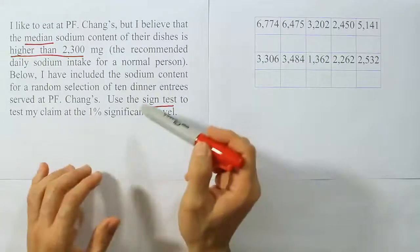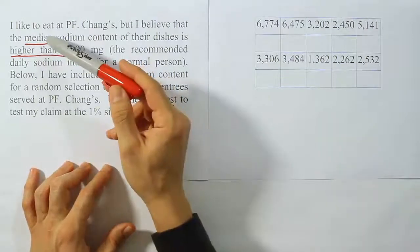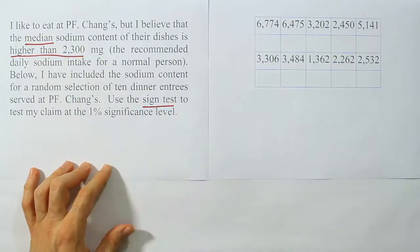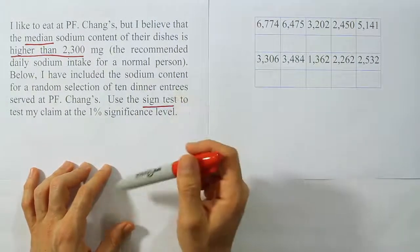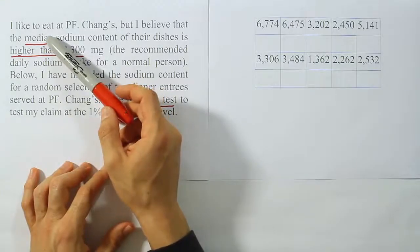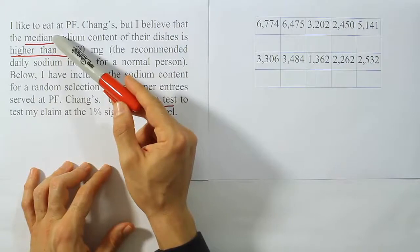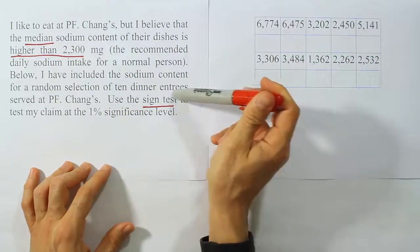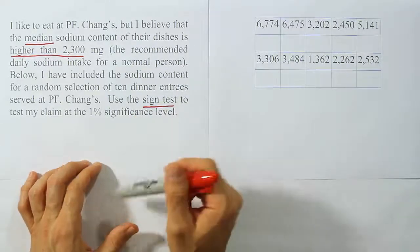It's clear that we're dealing with the sign test because it tells us that explicitly, and also another clue is that they mentioned we're talking about the median being higher than 2300 milligrams. The sign test was the biggest clue. Every time we work with the median it does not mean we're always working with the sign test, but certainly the mention of the median indicates a non-parametric procedure. Specifically in this case, we're going to do the sign test, which is the specific non-parametric procedure they want us to use.